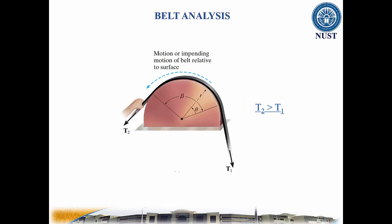Hence T2 must be greater than T1. Detailed analysis shows this relationship between T1 and T2, where mu is the coefficient of static friction between the belt and the surface. Be sure to use radians when using this formula.